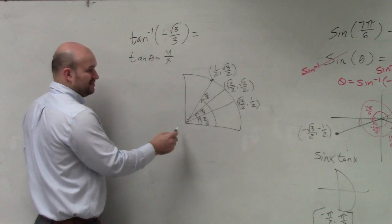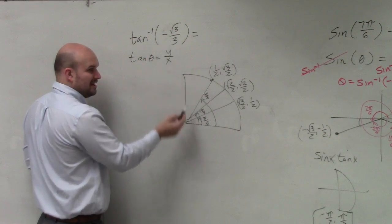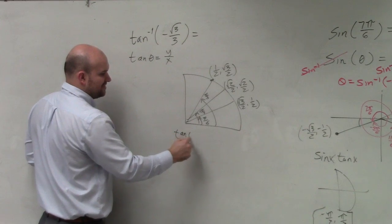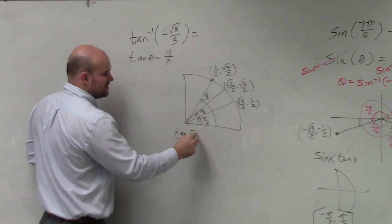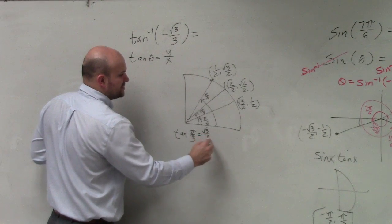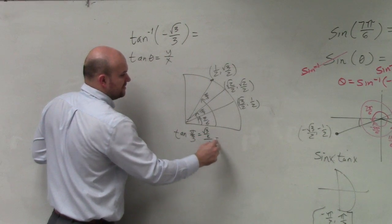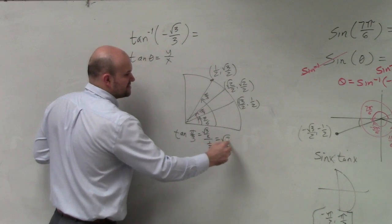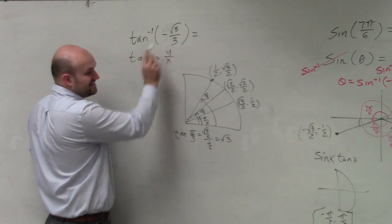So what I would do is, why don't we just start from the top? Let's do a process of elimination. Let's do tangent of pi over 3. That is equal to square root of 3 over 2 divided by 1 half. That simplifies, because I've been doing this so often, to square root of 3. That's not it.